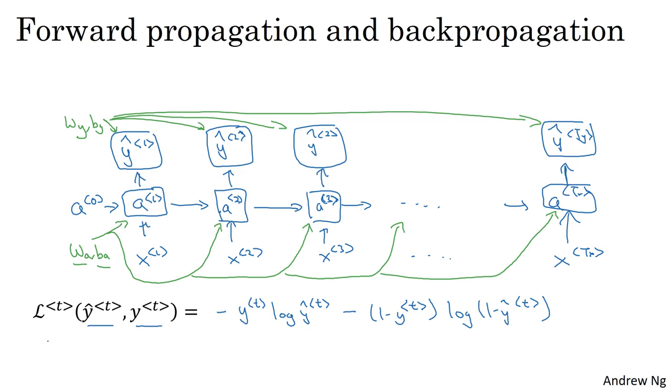Let's now define the overall loss for the entire sequence. So L will be defined as the sum over all t equals 1 to tx or ty. Tx is equal to ty in this example of the losses for the individual time steps, yt.